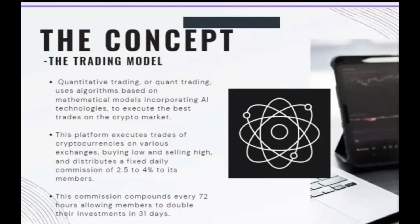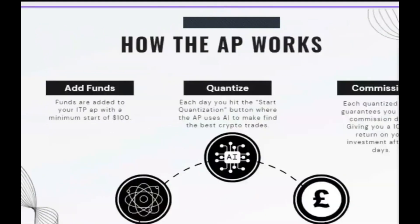The commission also compounds every 72 hours, allowing members to double their investments in literally 30 days. If I was to invest $500 today, in 30 days on a compounding model that investment will become $1,000. After which I withdraw $500 - I'm now risk-free and playing solely with profits. How does the app work? Very simple - you literally add funds into the ITP app using an exchange.